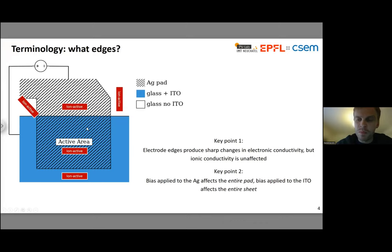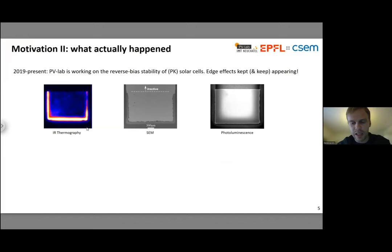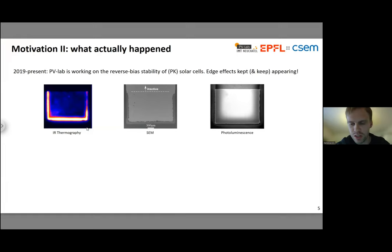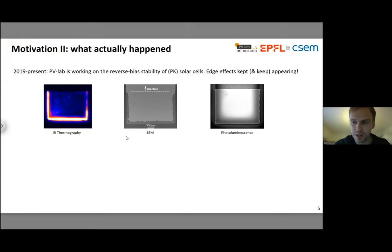That's the high-level overview of what I'll describe in more detail in the following slides. That insight might seem fairly simple after the fact, but it's not the one I started with by any means. What happened is I started a project on reverse bias stability. Our group, the PV lab, has been working on understanding and improving reverse bias stability in perovskite cells for a couple of years now. And I just kept running into these edge effects — I kind of tripped over them in quite a literal sense. I didn't come with an a priori understanding that lateral ion migration would be relevant; it just kept occurring in my tests.